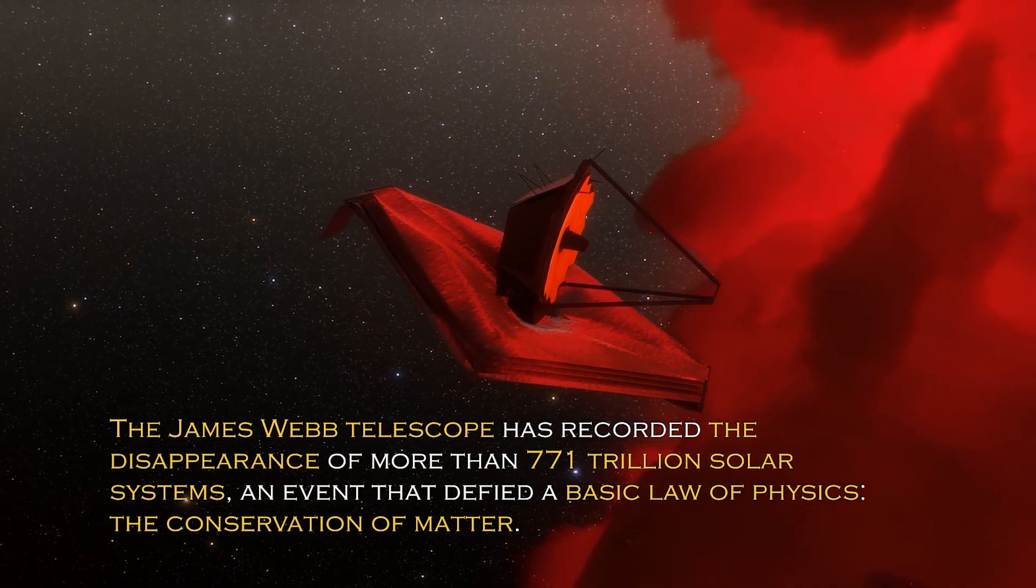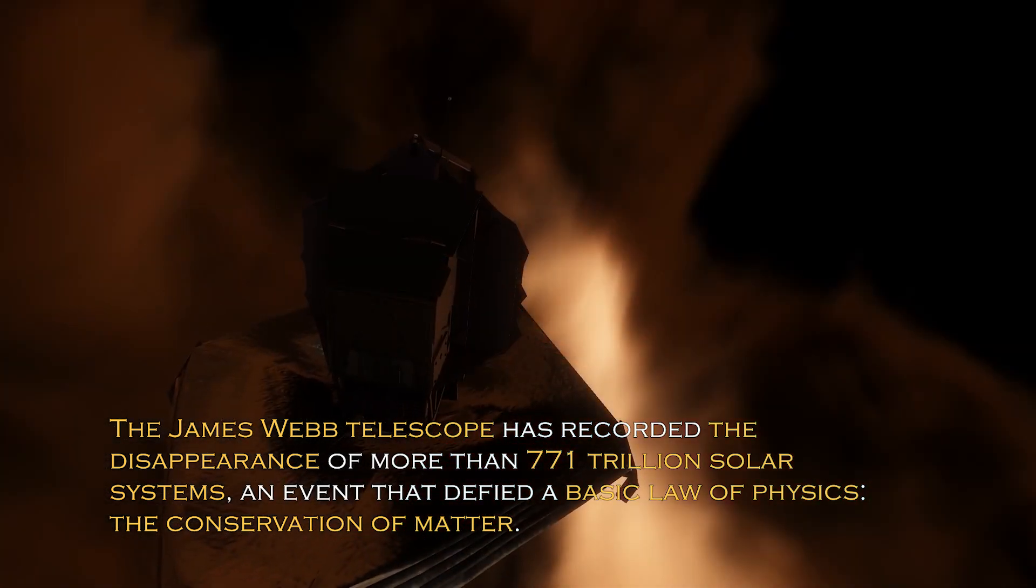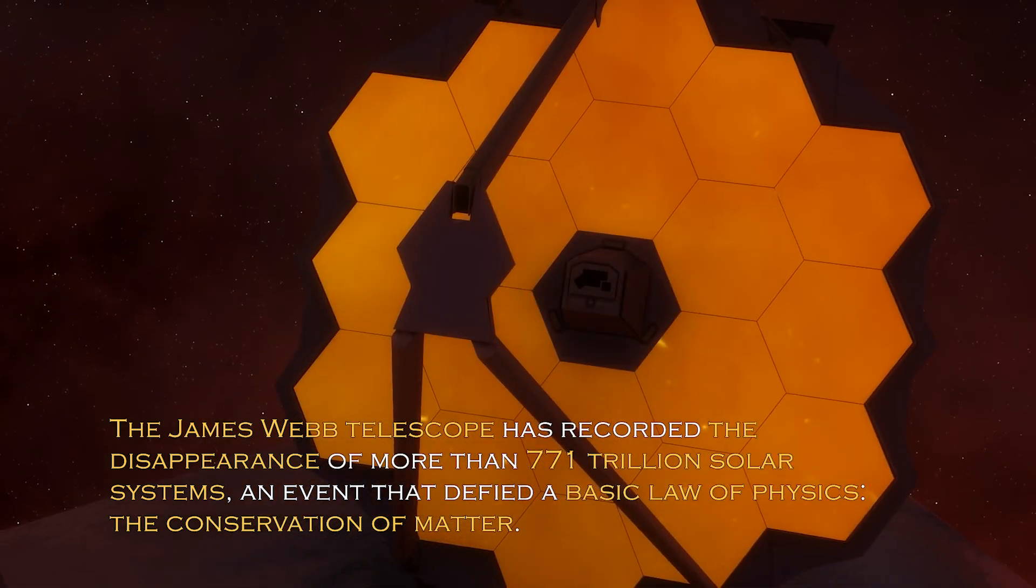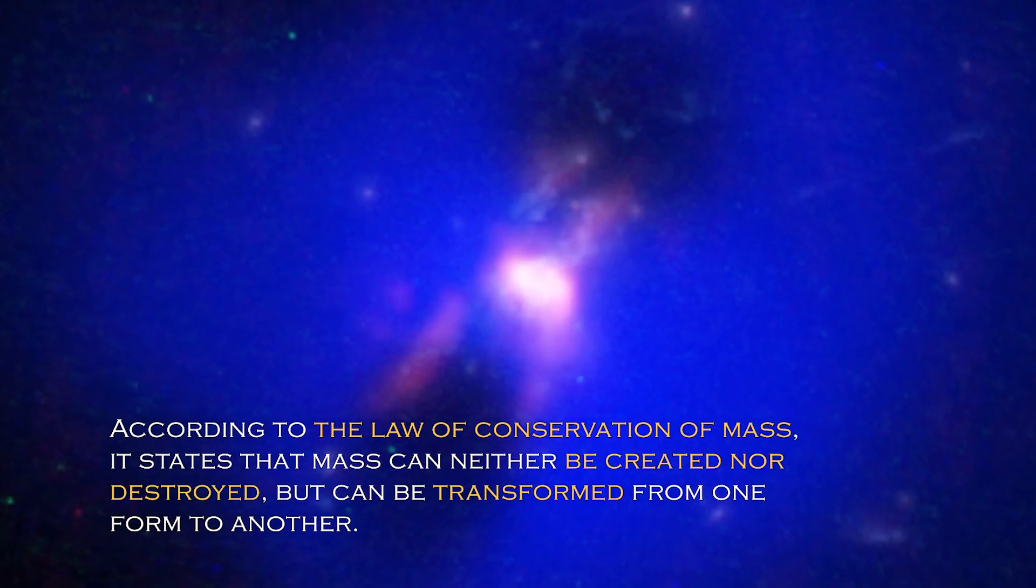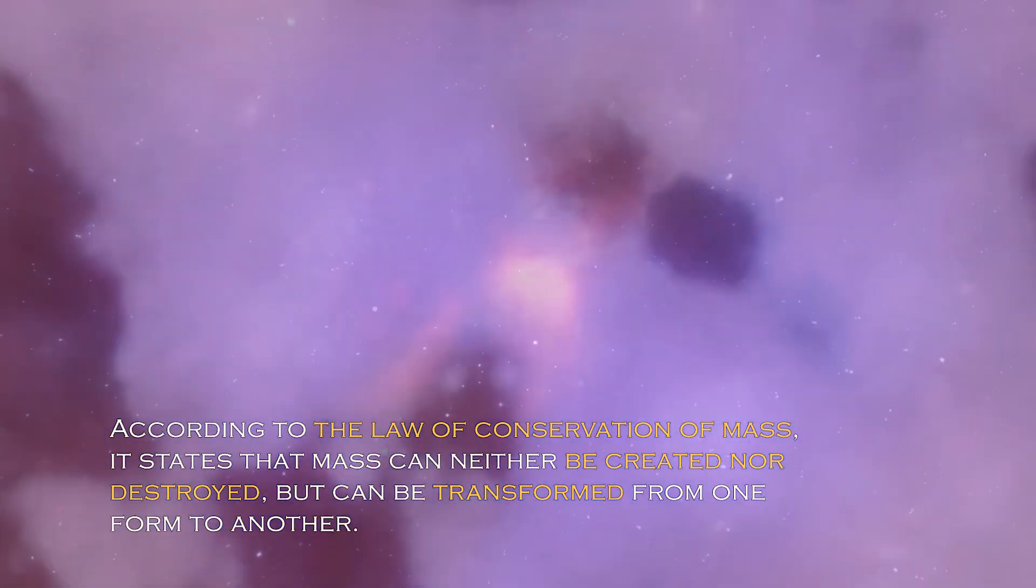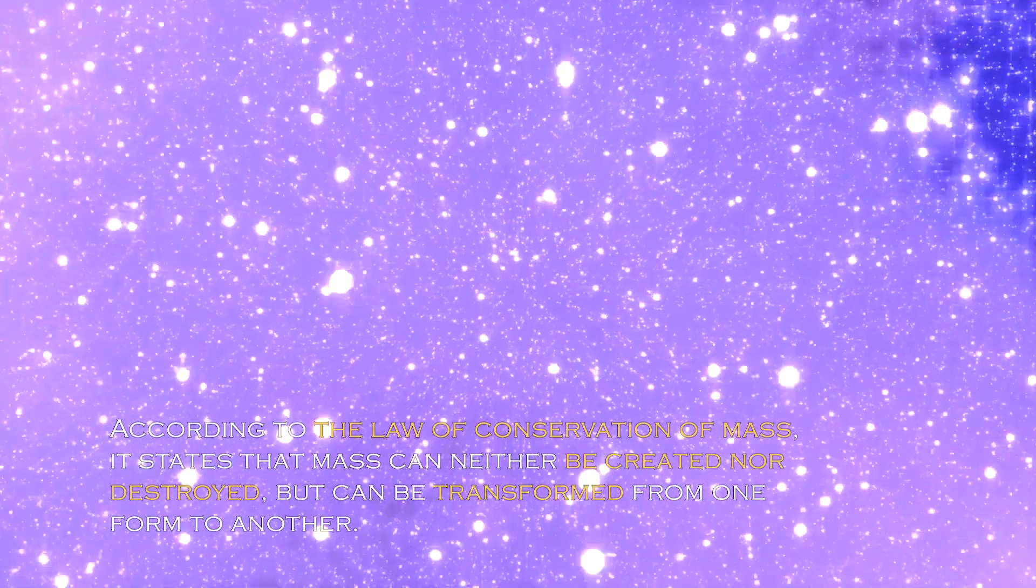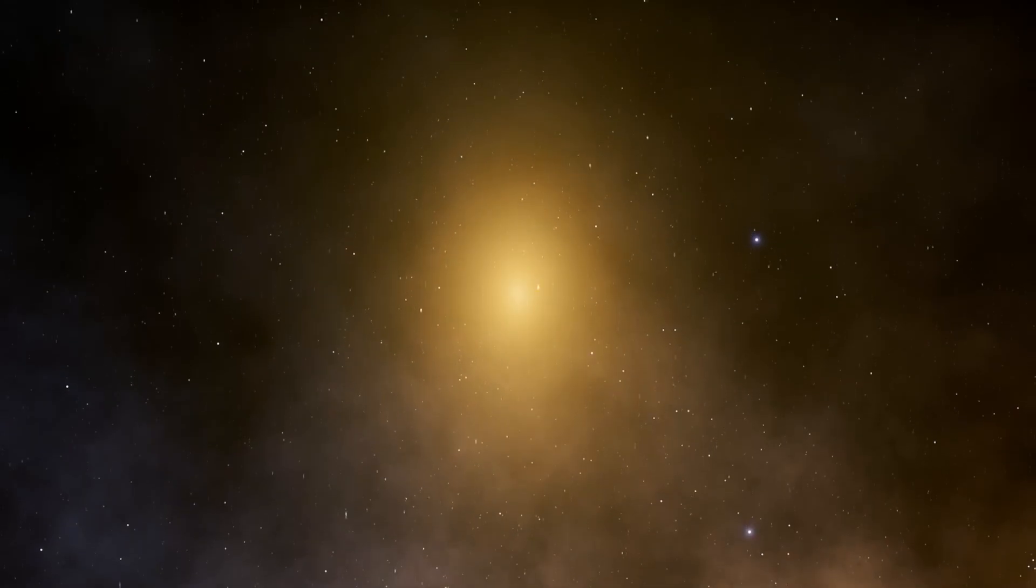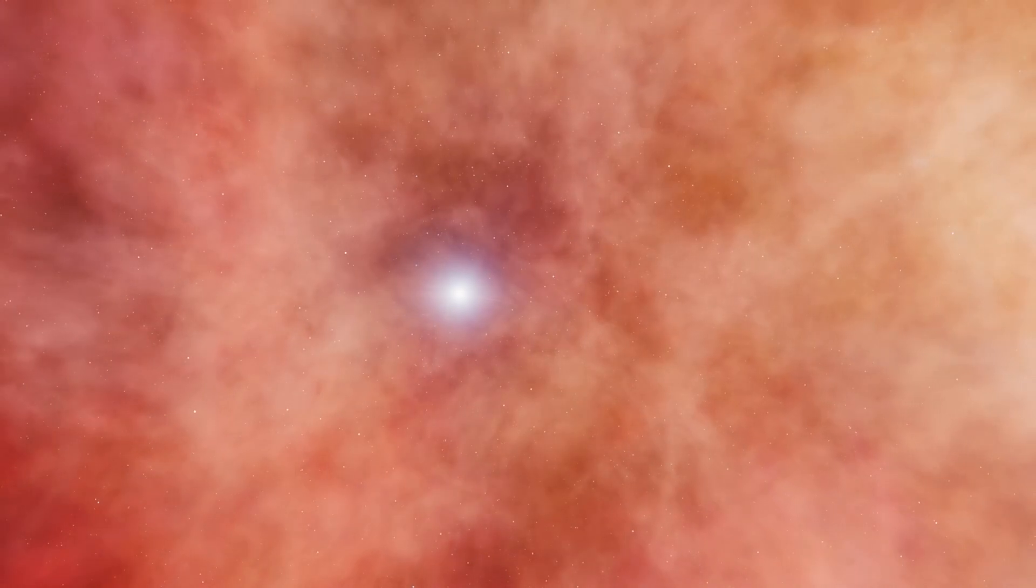The James Webb telescope has recorded the disappearance of more than 771 trillion solar systems, an event that defied a basic law of physics, the conservation of matter. According to the law of conservation of mass, it states that mass can neither be created nor destroyed, but can be transformed from one form to another. Since research on the universe has been based on principles such as this one, it is challenging for scientists to explain the disappearance of an entire world composed of stars and planets from the universe.